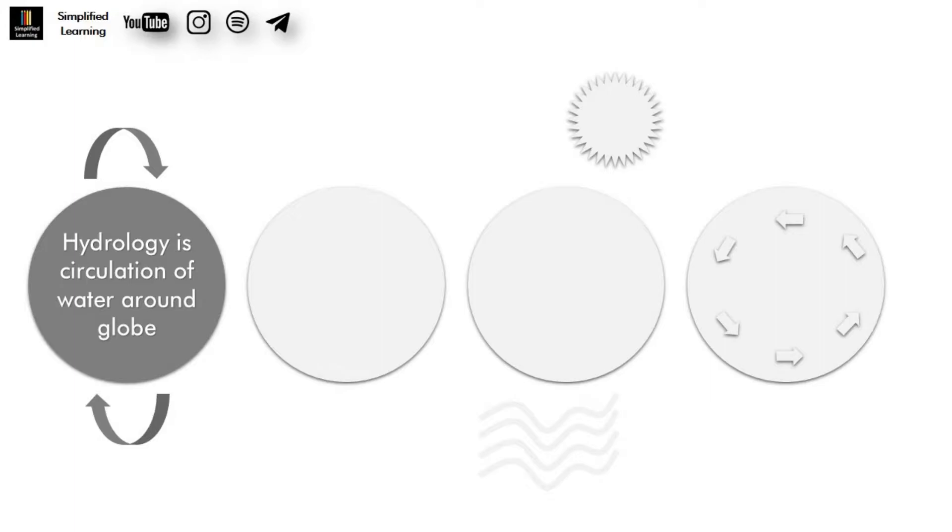Hydrology deals with occurrence, circulation and distribution of water on earth and atmosphere. Hydrology is the science that deals with charging and discharging of water resources.